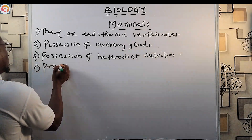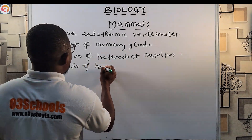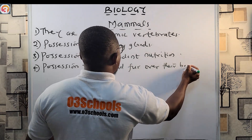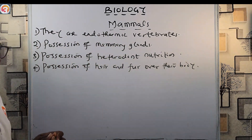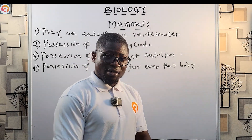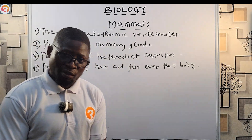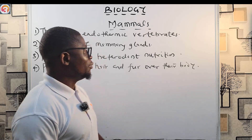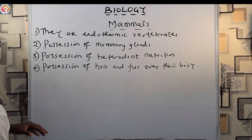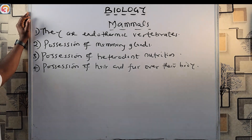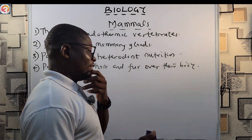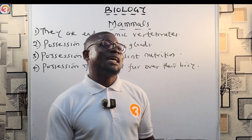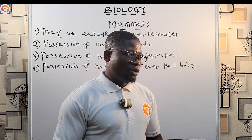Mammals also have possession of hair and fur over their body. Common mammals like dogs and goats all have hair. There are several orders in which mammals are classified — some say 28 orders, some say 14, but there are three major groups we will look at.